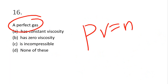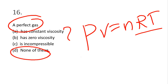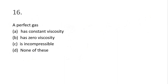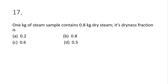Question 16: a perfect gas — ideal gas — follows PV = nRT, Charles's law, Boyle's law, Gay-Lussac's law, and Avogadro's number. The correct answer is none of these options individually, as all these laws belong to thermodynamics and fluid mechanics. Option D is the correct answer.